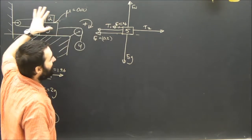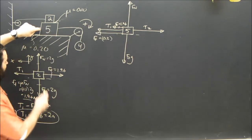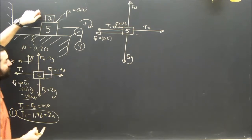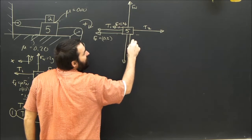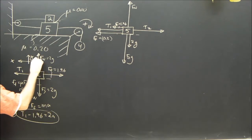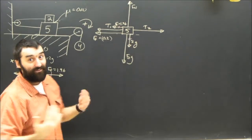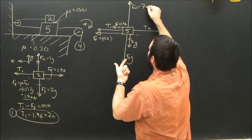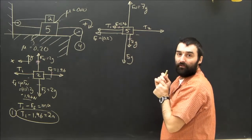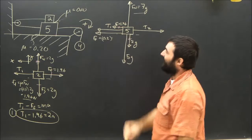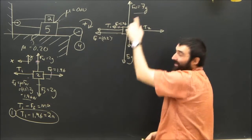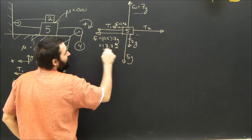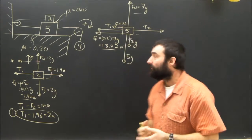FN on the five is not equal to 5g. The five pushes up on the two — that's the normal force on the two — and by Newton's third law, the two pushes down on the five with the same force, 2g. So the normal force on the five has to balance both gravity and the two kilogram object's weight, making it 7g. That's the normal force we use to calculate friction between the table and the five. So that friction is 0.20 × 7g = 13.72 N.